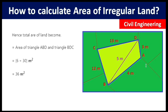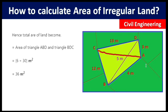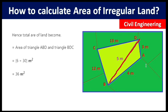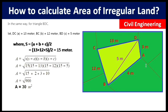To revise briefly: first, draw a diagonal line joining any two corners of the land. This divides the land into two triangles. Calculate the area of each triangle separately using Heron's formula, then add both areas to get the total area of the irregular land.